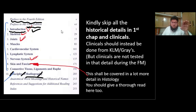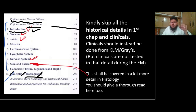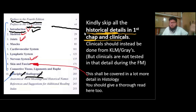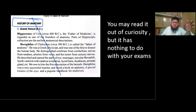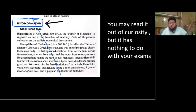An important point: there is a lot of historical data given in the introduction chapter — history of anatomy, history of this and that — and all of that is to be omitted. Historical details are not part of the syllabus and there are no questions from them, so you can skip them entirely. You may read them out of curiosity, but there's no need. Start directly from the section called 'Language of Anatomy.'